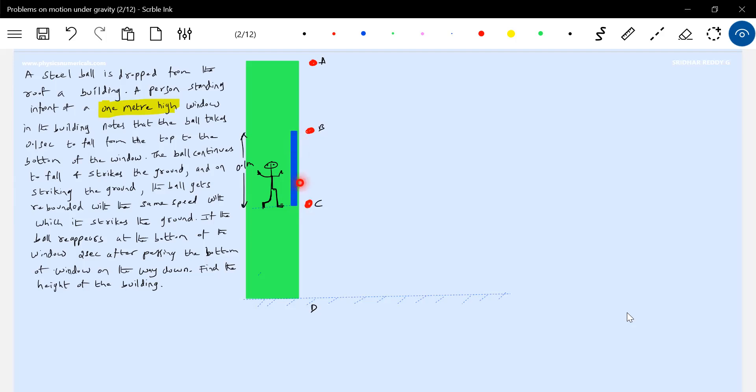The ball continues to fall, strikes the ground, and on striking the ground, the ball gets rebounded with the same speed. If the ball reappears at the bottom of the window two seconds after passing the bottom on the way down, find the height of the building. It's applying equations of motion.